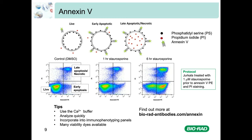In this example I used PI as the live-dead stain, but we are not limited to PI — other dyes such as DRAQ7 and DAPI could be used instead.